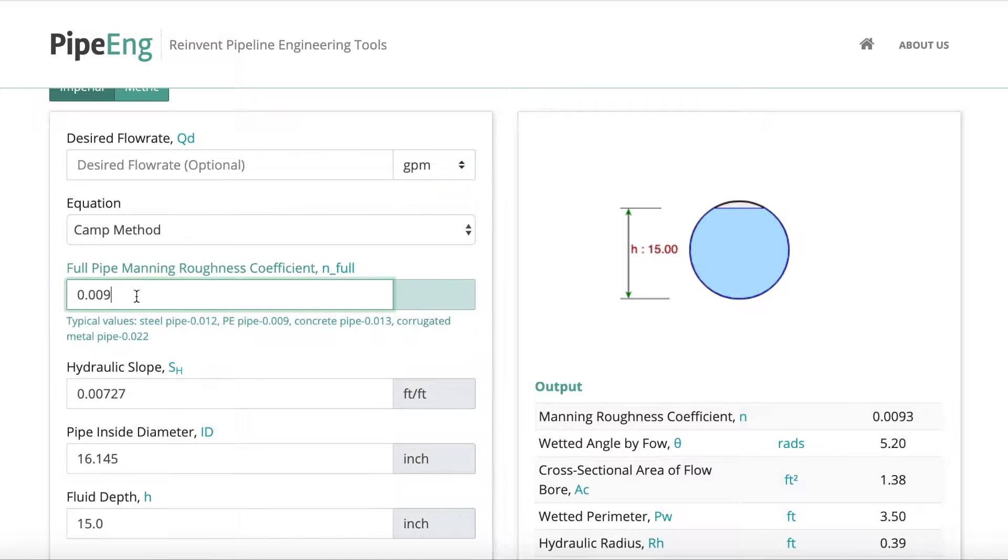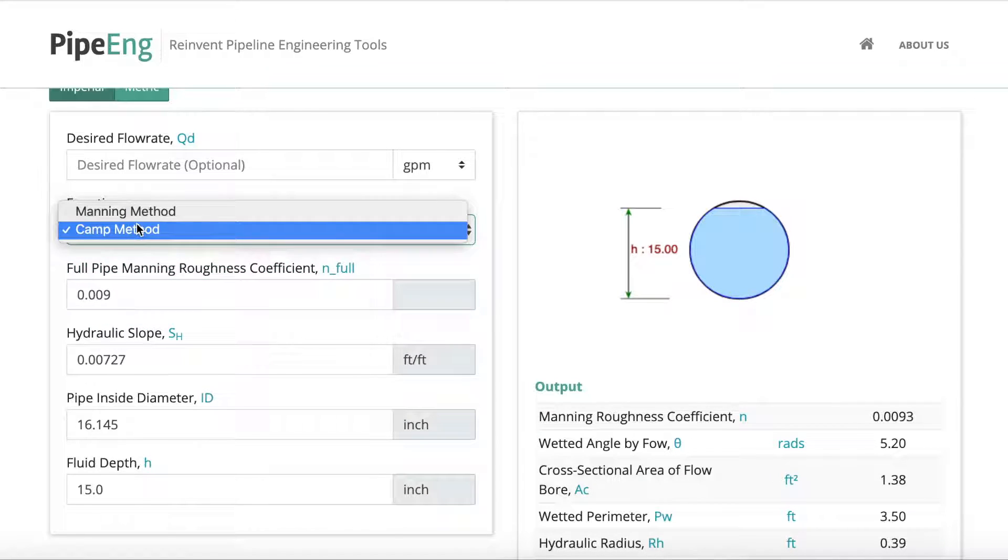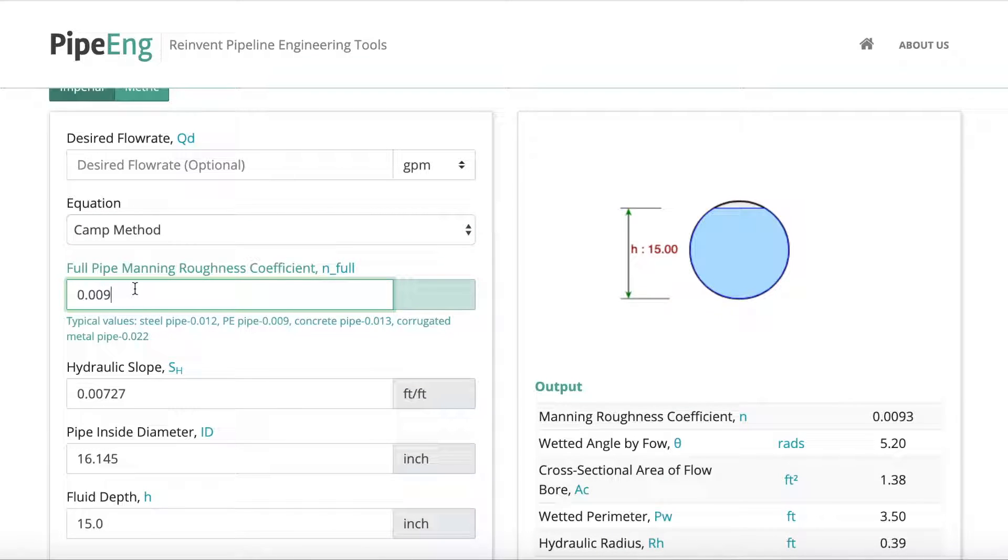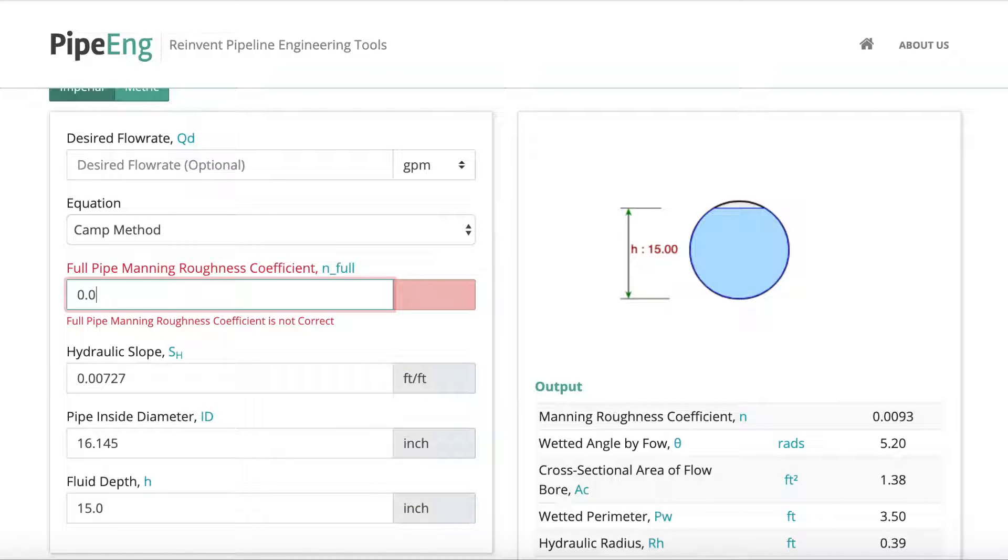So let's say you have, so the first here, this is for the second case. So the first thing you're going to choose is to use Manning method or Camp method. The next input is for full pipe Manning roughness coefficient. So we have some typical values you can use. The typical values depend on the type of the pipe. So in this case, let's say we have a steel pipe. So let's change this to 0.012.